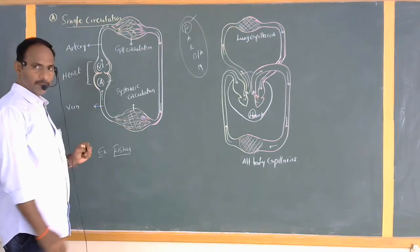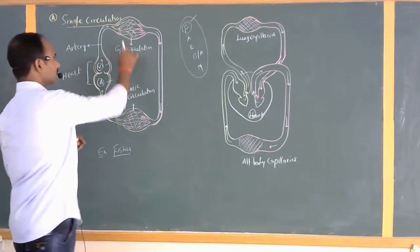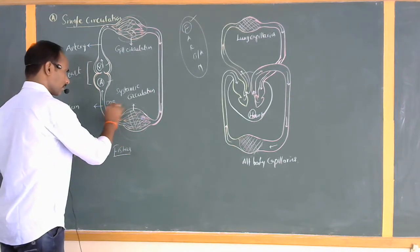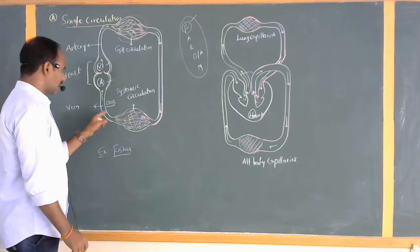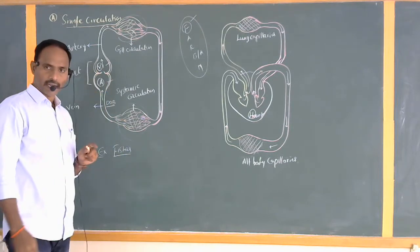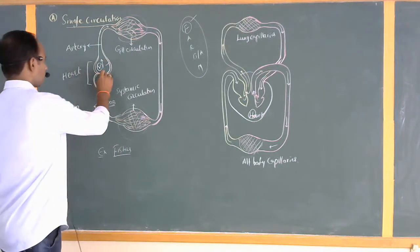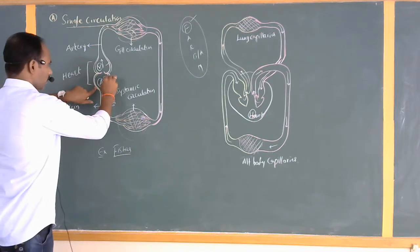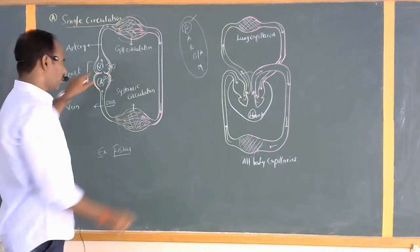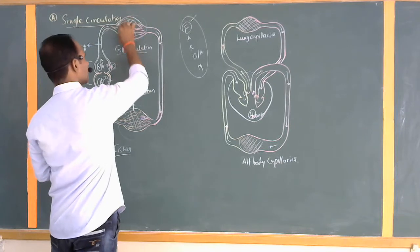How does circulation work in fishes? From the body parts — called systemic circulation — deoxygenated blood is taken directly to the atrium. The atrium sends the blood into the ventricle. The ventricle also contains deoxygenated blood, and that same deoxygenated blood passes directly to the gill circulation through the gill capillaries.